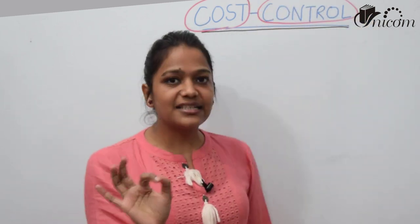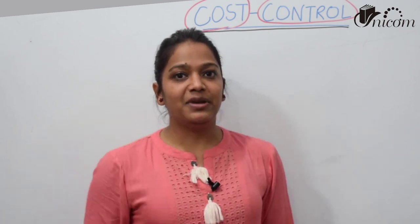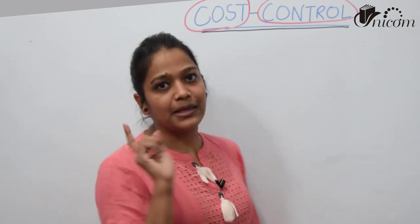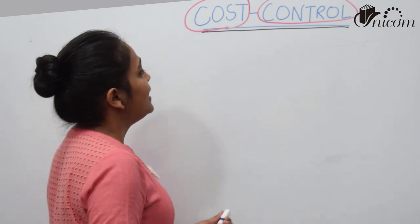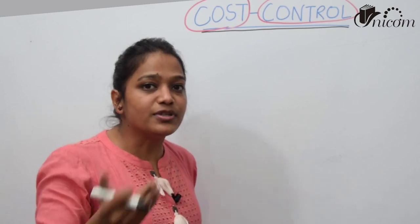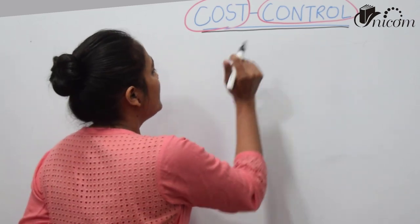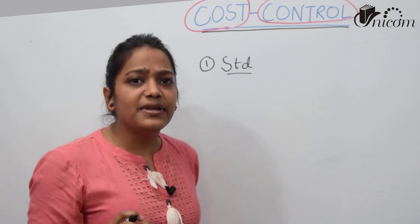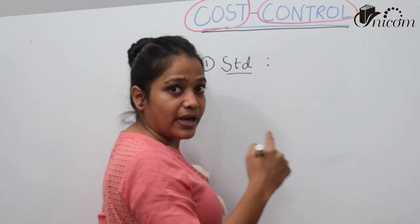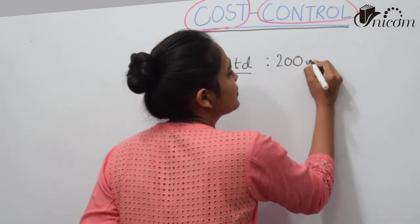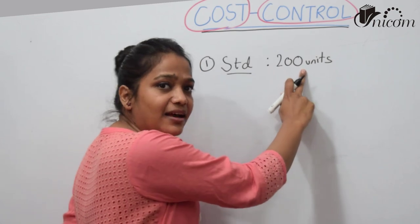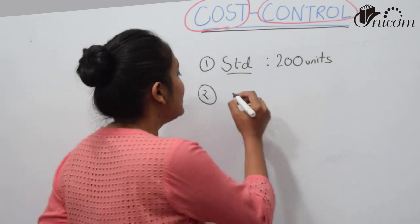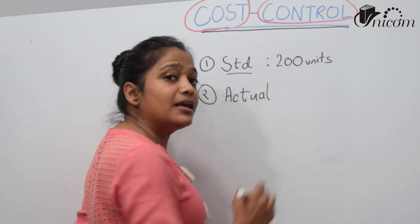This control word you will encounter wherever you study — whether it is in strategic management, financial management, or cost and management accounting. You should know what control means. Control is a procedure, it is a process. First, you set your standards. For example, you set a standard that you have to make 200 units in a month.